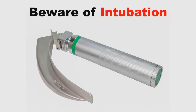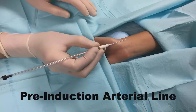Next, you want to avoid intubating these patients if at all possible. They don't tolerate the increase in RV afterload that comes with positive pressure ventilation, and they don't tolerate the hypotension that comes with most of the induction agents we use. But if you're stuck intubating one of these patients, and if time allows, think about putting an arterial line in prior to induction, because that's going to allow you to capture the moment-to-moment swings in hemodynamics that you're going to need to respond to immediately.